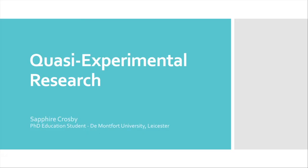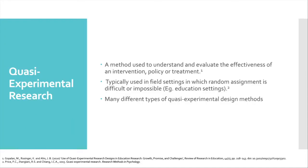In this presentation I'm going to be speaking about quasi-experimental research. Quasi-experimental research or design is a method used to understand and evaluate the effectiveness of an intervention, policy, or treatment. It is typically used in field settings in which random selection for either control or experimental groups is difficult or impossible.